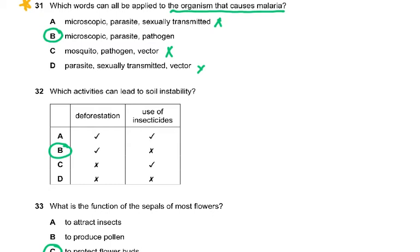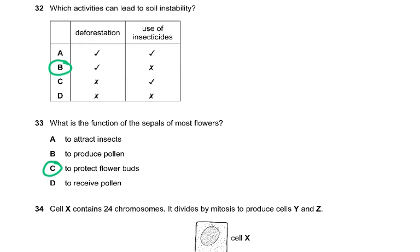Question 32: which activities can lead to soil instability? Deforestation will lead to soil instability and soil erosion. But insecticides — why would they lead to soil instability? Insecticides just kill insects on the crops. That's why we spray crops with insecticides. So deforestation causes soil instability but insecticides do not.